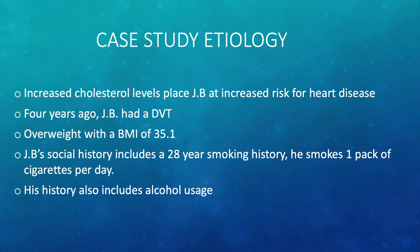For the etiology in our case study, JB had increased cholesterol levels that led to increased risk for heart disease. Four years ago, JB had a DVT, which is a strong risk factor for having another one. JB is overweight with a BMI of 35.1 — obesity doubles the risk of blood clot formation. His social history includes a 28-year smoking history and a history of alcohol usage.